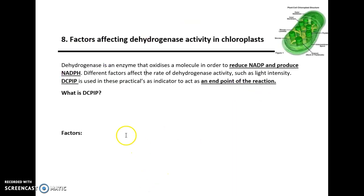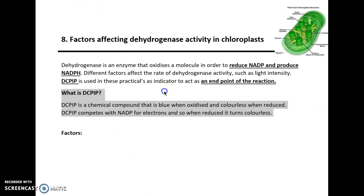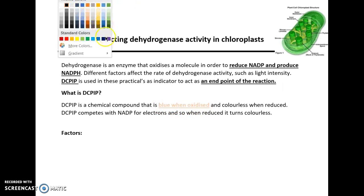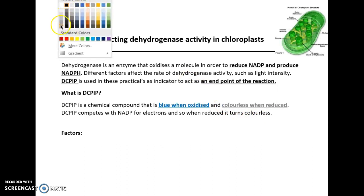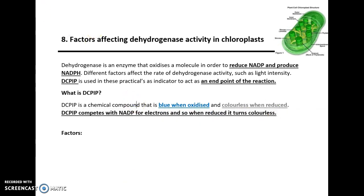However, we can't see this reaction. So in order to see it, we use a compound called DC-PIP. DC-PIP is a compound that is blue when oxidized. However, it is colorless when it's reduced. So it's blue when oxidized and colorless when it's reduced. When it gains electrons, it becomes colorless. DC-PIP effectively competes with NADP for electrons, and when it gains those electrons, it becomes reduced and colorless as a result.